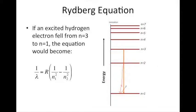well the Rydberg equation would allow us to calculate the wavelength for the light that was emitted when that electron fell from 3 to 1.